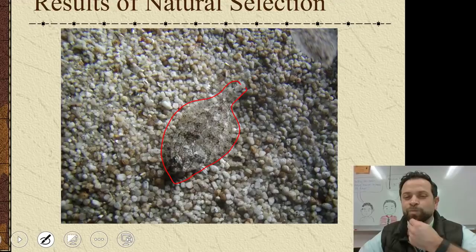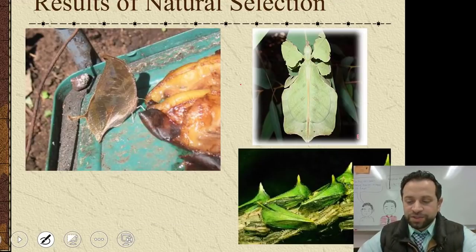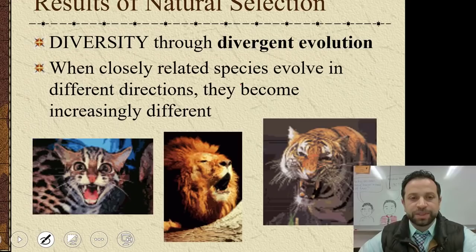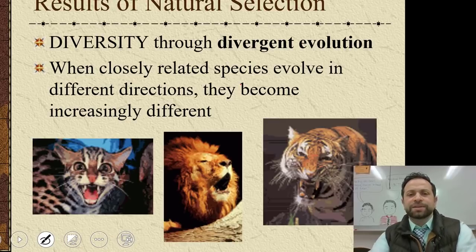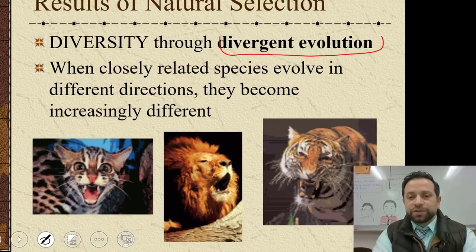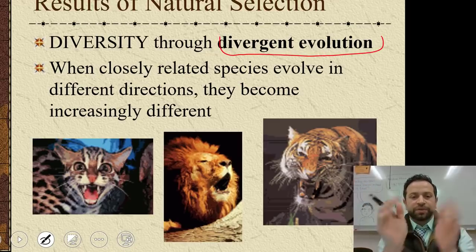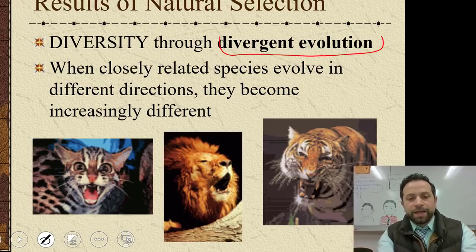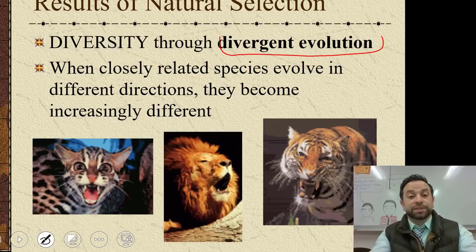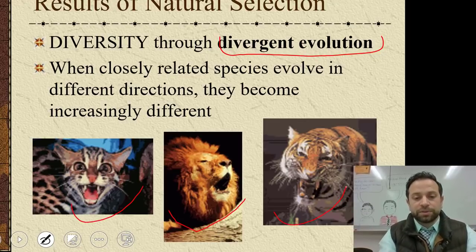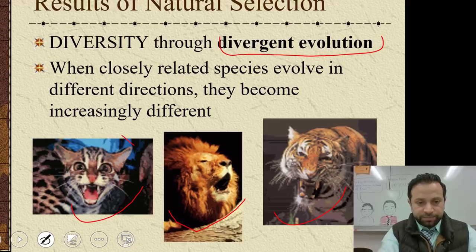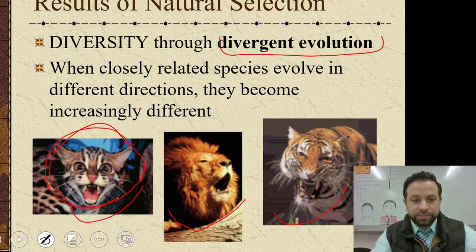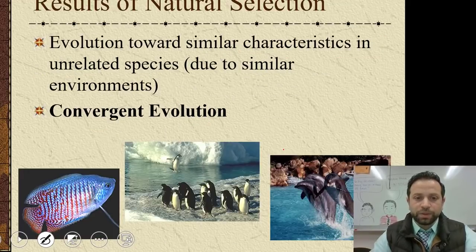Is that mimicry or camouflage? Let's get into divergent evolution. The term 'diverge' means to go in separate directions — it's when closely related species evolve in different directions and become different as they continue to evolve. Examples include the house cat, lion, and tiger.